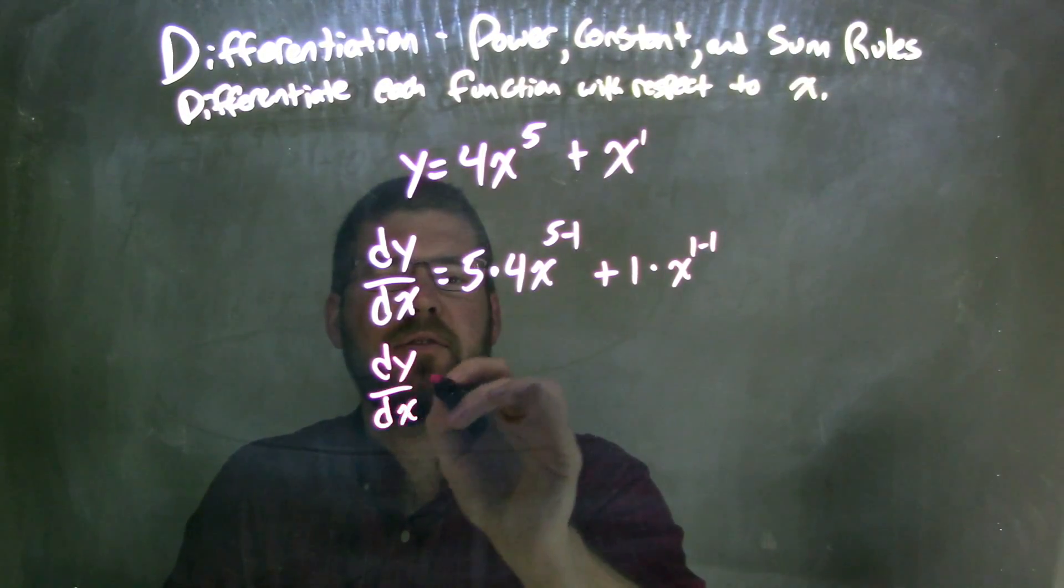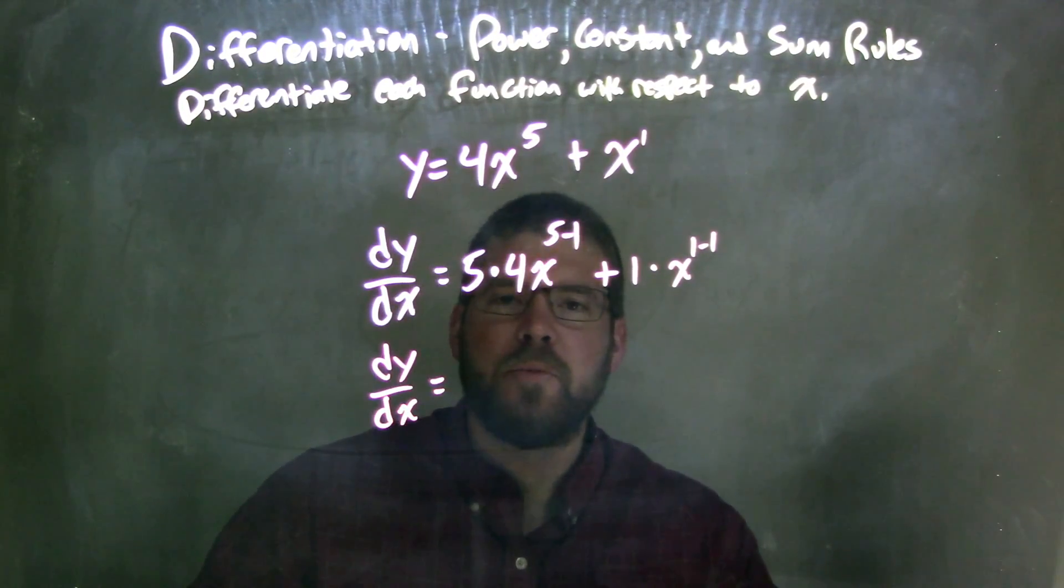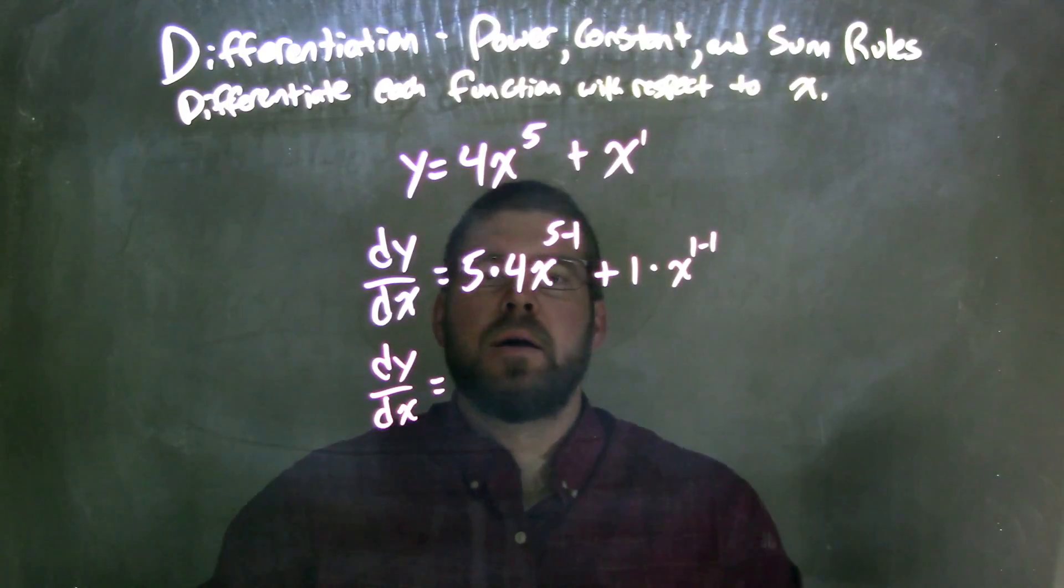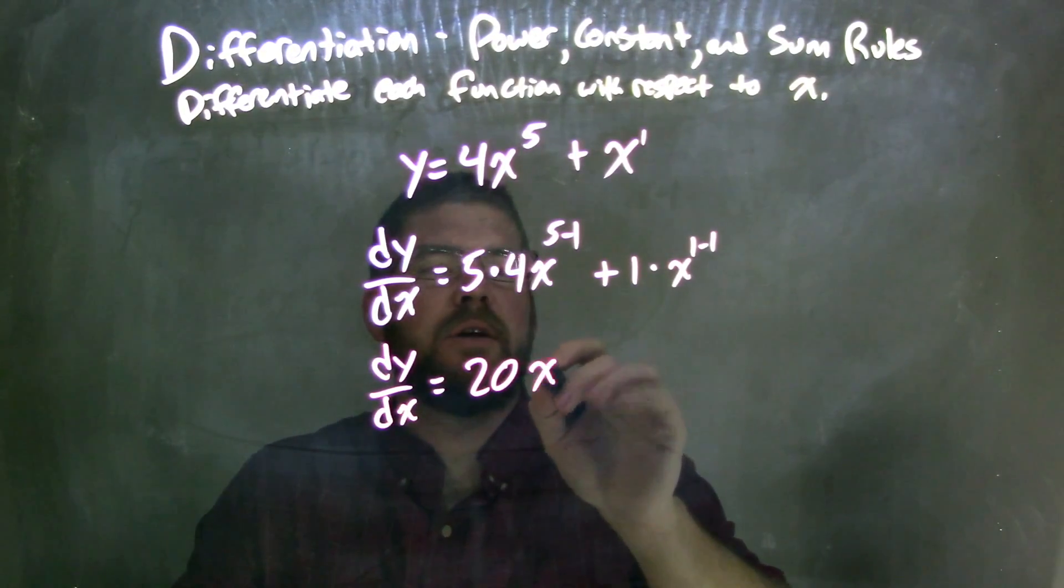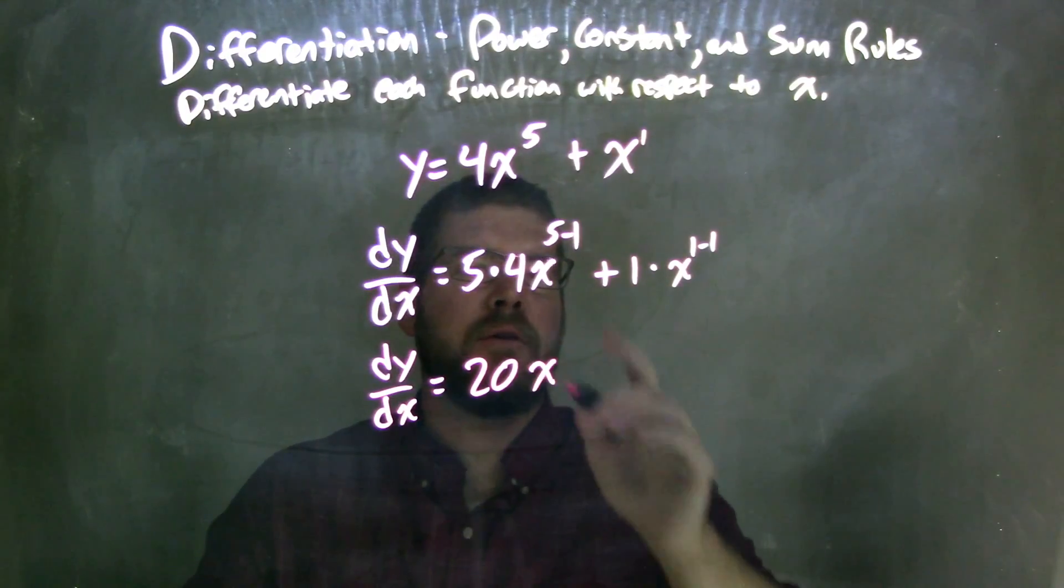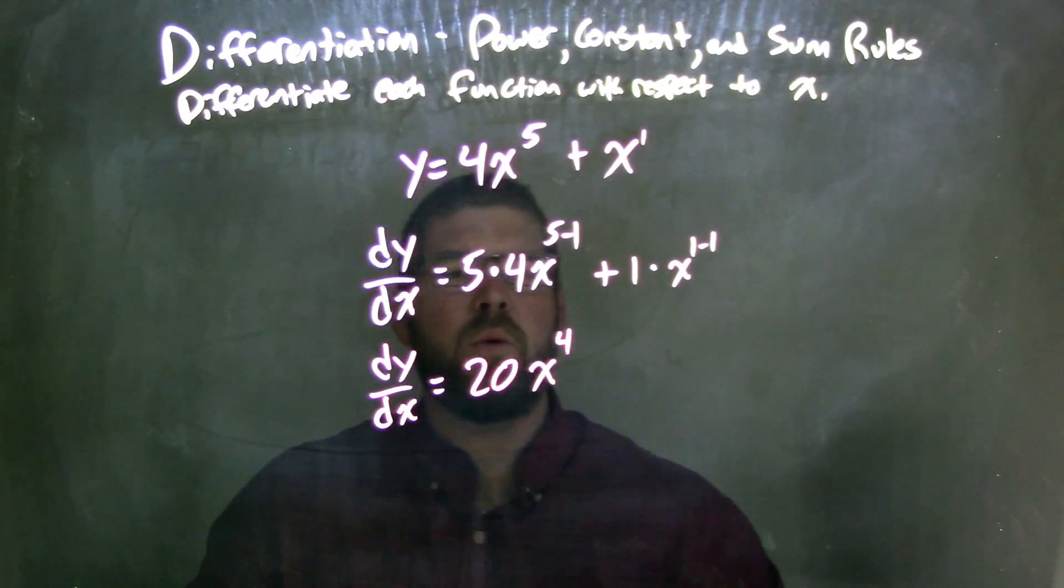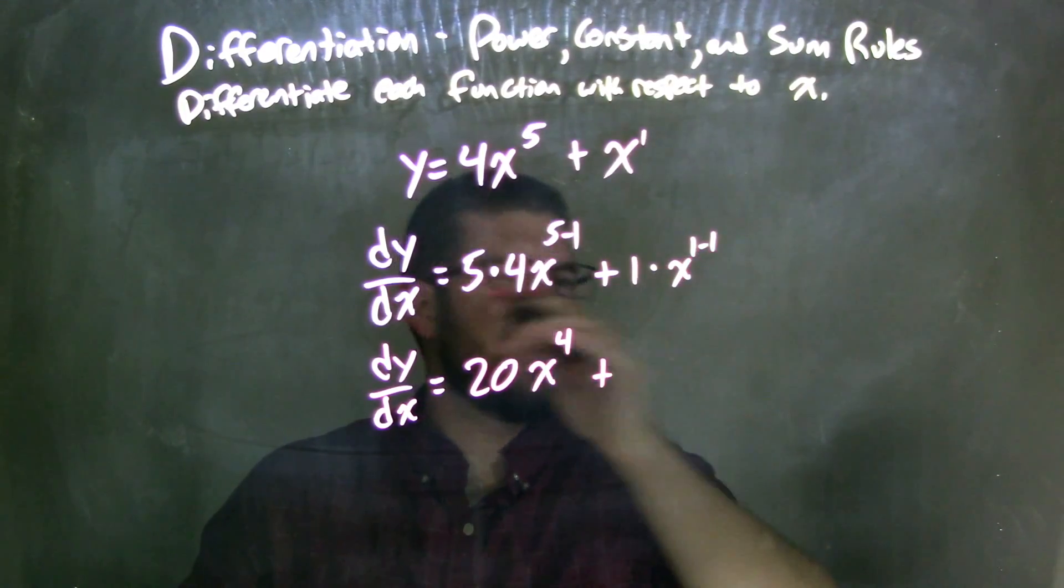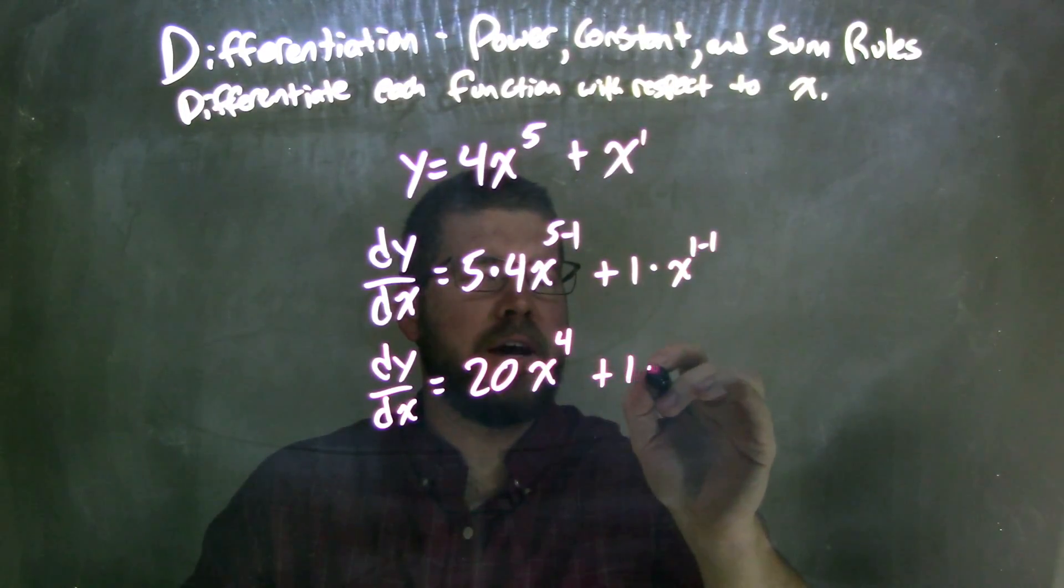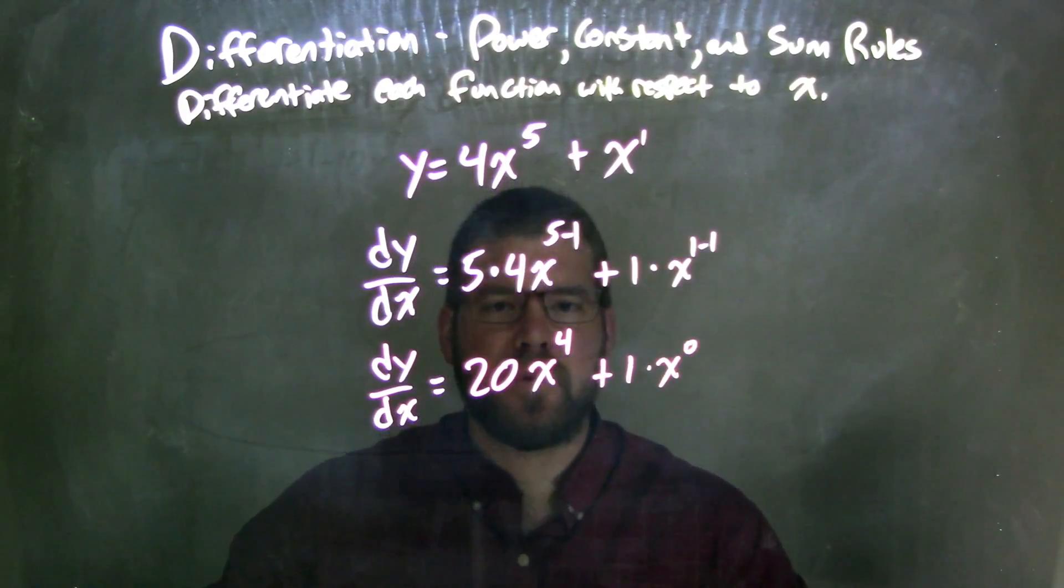dy/dx, derivative of y with respect to x, is equal to 5 times 4, which is 20x, and then 5 minus 1 power. 5 minus 1 is 4, so we have 20x to the 4th power, plus, well, x to the 1 minus 1 is 0. So we have really 1 times x to the 0 power.